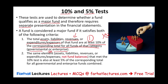If it met test one, we go to test two. The same element — for example, revenue — that met the 10% must also be at least 5% of the corresponding total of all governmental and enterprise funds combined. So we look at the revenues of this fund and ask: do they represent 5% of the revenues of governmental and enterprise combined? If yes, the fund is considered a major fund.